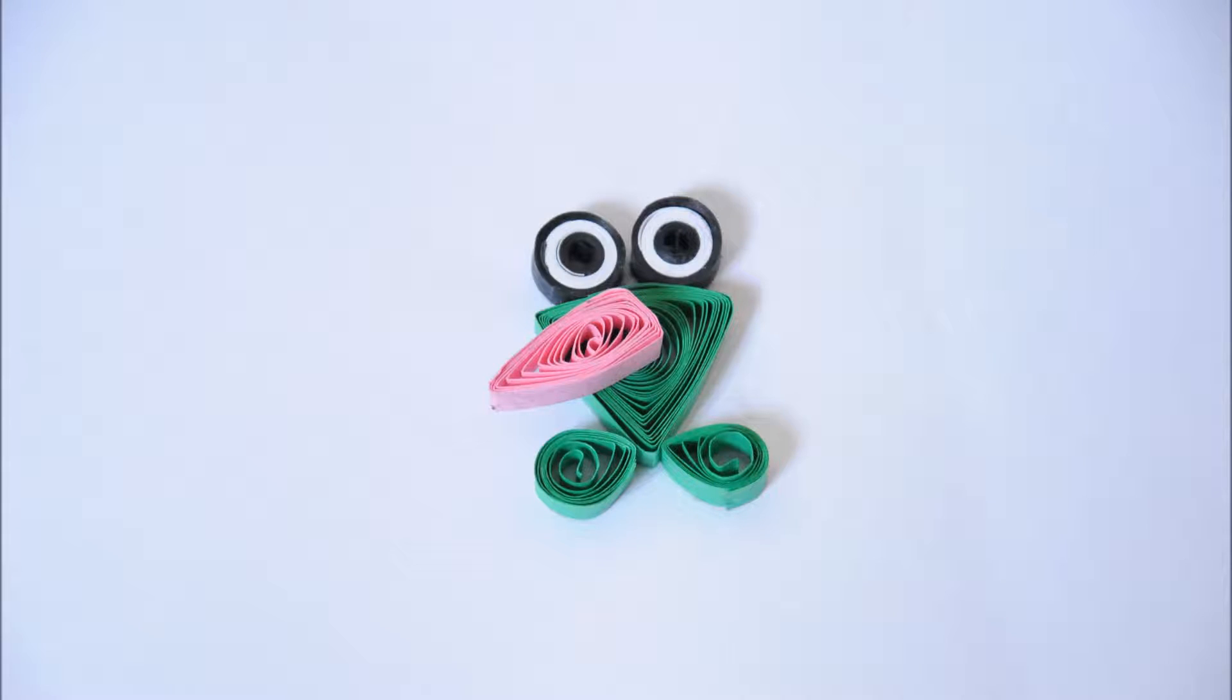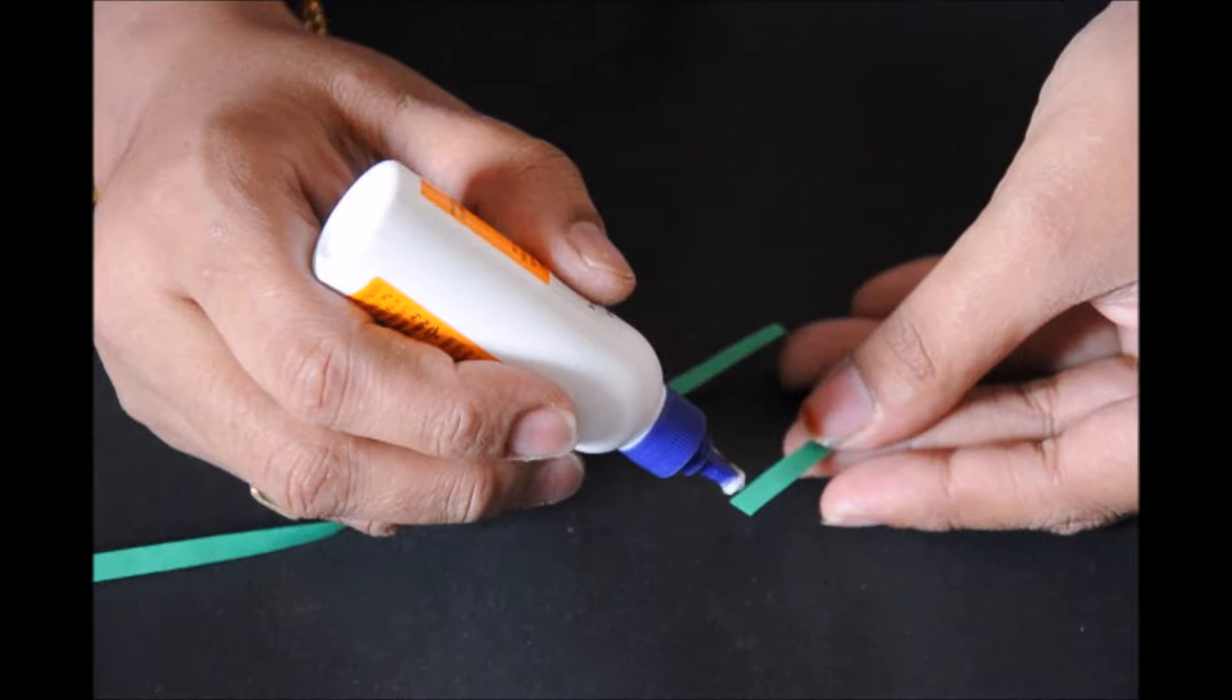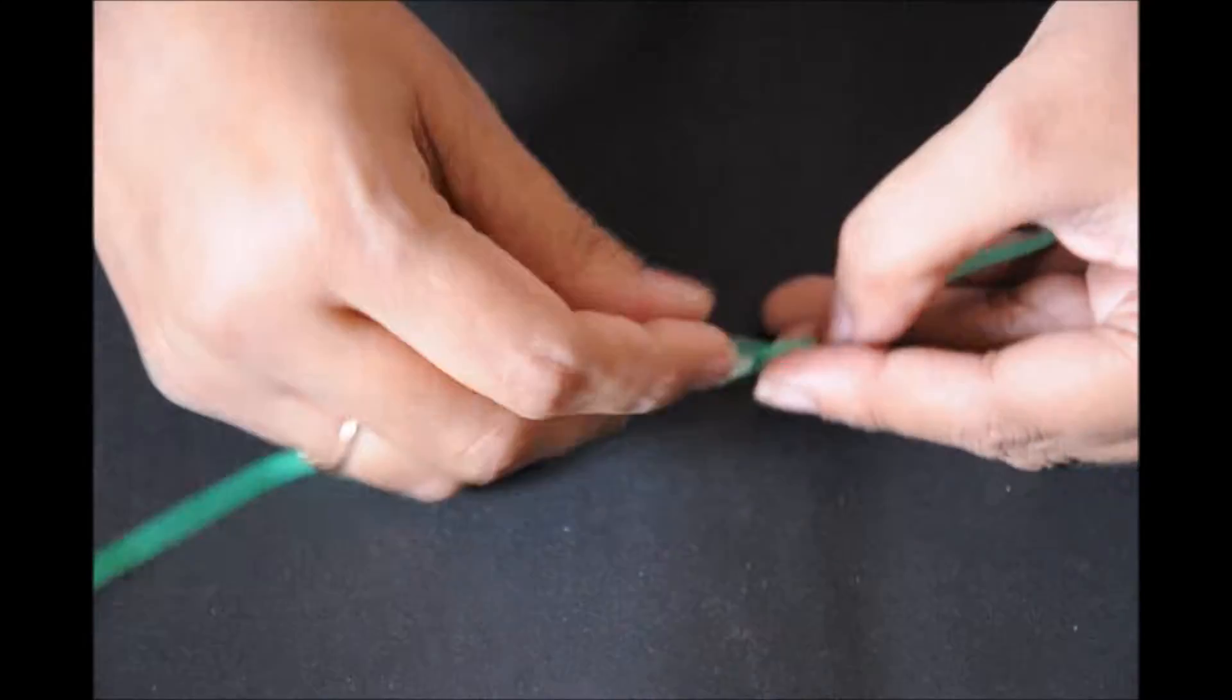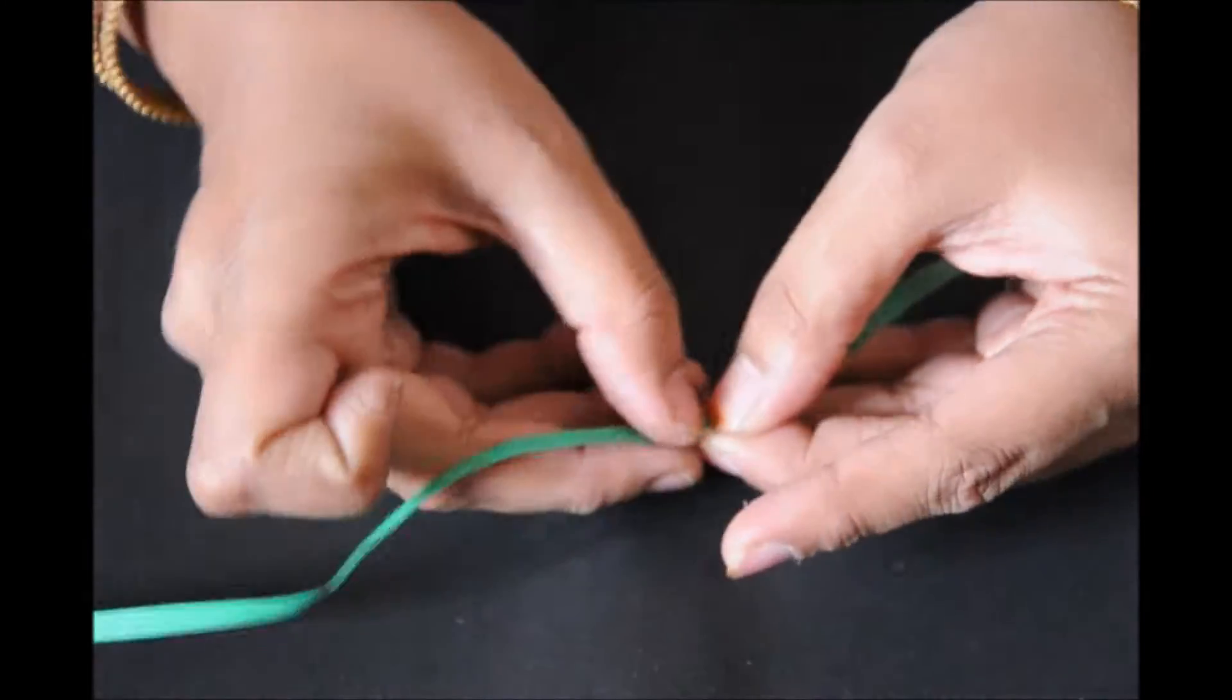It's Sea Arts Presence. Today we are going to see how to make this beautiful quilled frog. The materials required are quilling strips, quiller, glue, and scissors. Take the green color quilling strip and join it with another quilling strip.